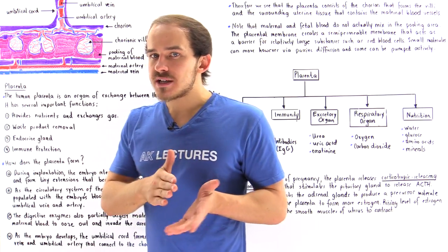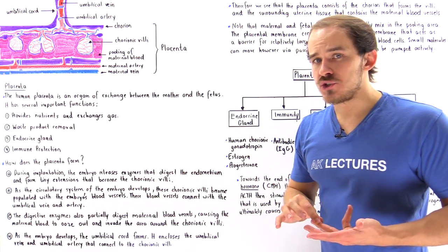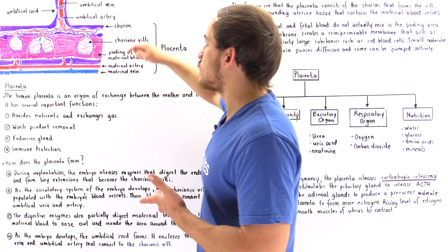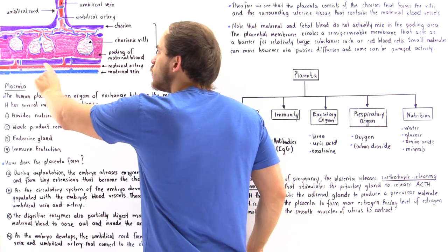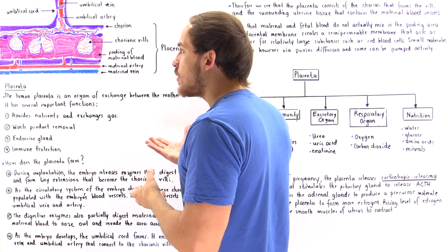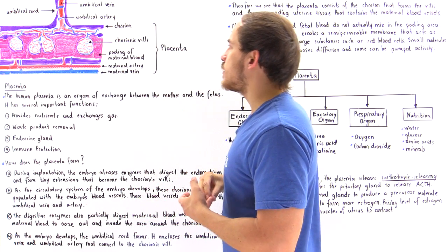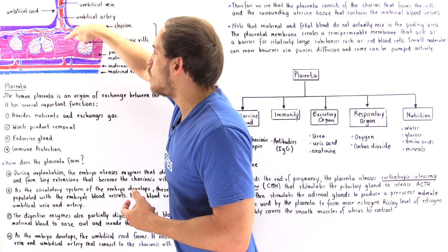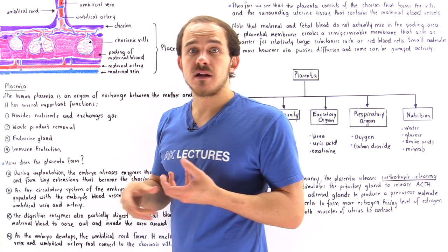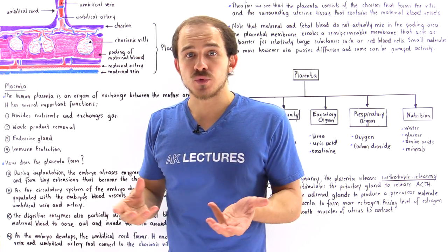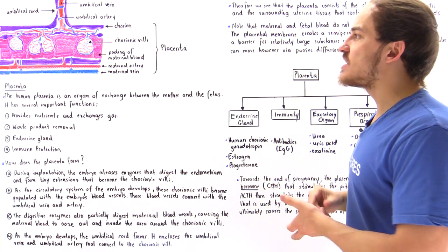Once those digestive enzymes begin to break down the endometrium — the connective tissue — they also break down the vascular tissue. That means those digestive enzymes released by the chorion eventually break down the maternal blood vessels found within the endometrium. As soon as we rupture these blood vessels, the blood of the mother actually oozes out and leaks out into the endometrium, into the area surrounding these chorionic villi. We have the pooling of the mother's blood, shown in a diagram as this light purple section, and what that allows is the exchange of nutrients, waste products, minerals, oxygen, and carbon dioxide between the blood of that fetus and the blood of the mother.